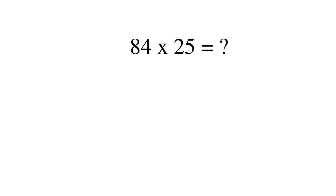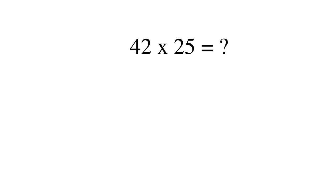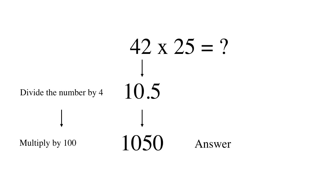Let's try this example: 84 times 25. We divide the number by 4 — 84 divided by 4 gives 21. In the next step, we multiply the answer by 100: multiplying 21 by 100, we get 2100. Another example: 42 times 25. We divide 42 by 4 and get 10.5. Then we multiply 10.5 by 100 and get 1050. That's the answer.